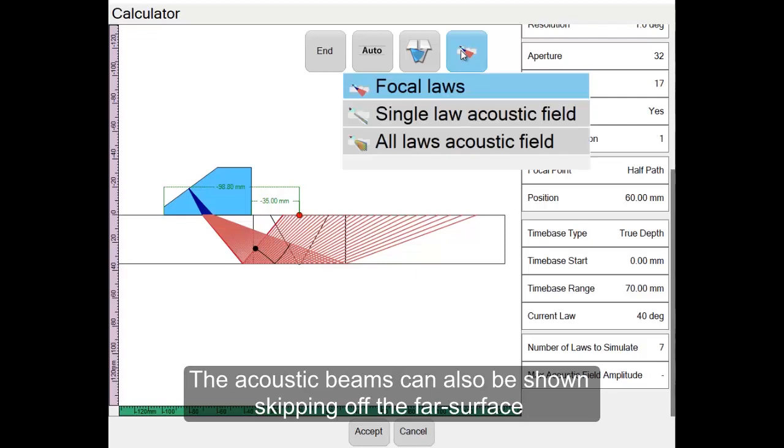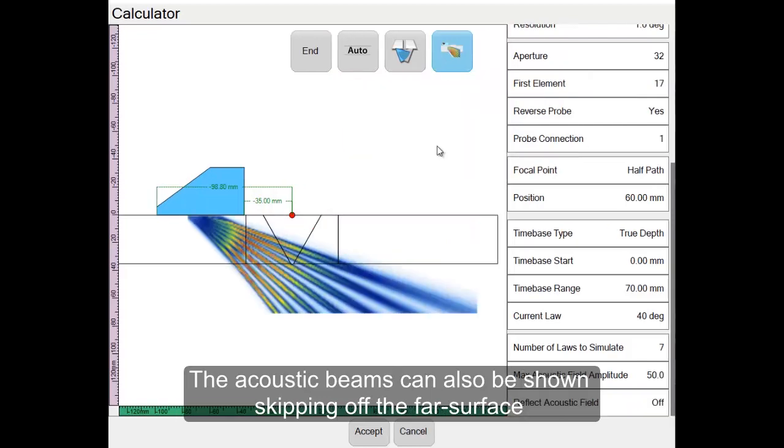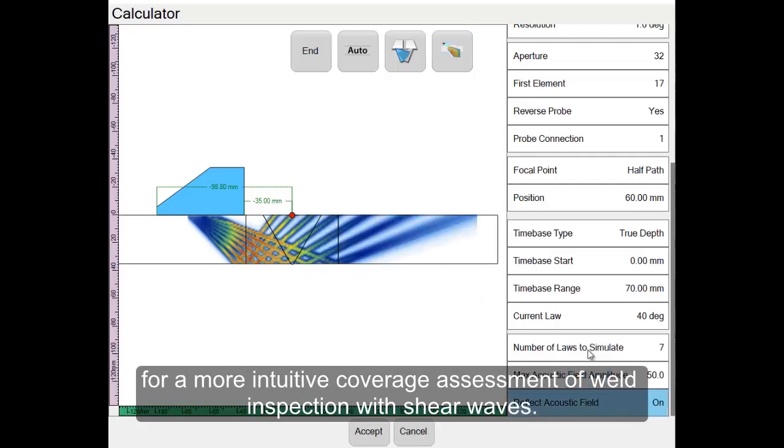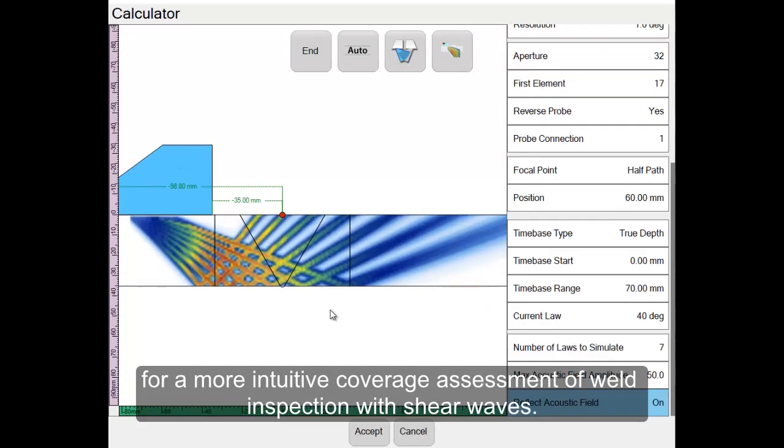The Acoustic beams can also be shown skipping off the far surface for a more intuitive coverage assessment of weld inspection with shear waves.